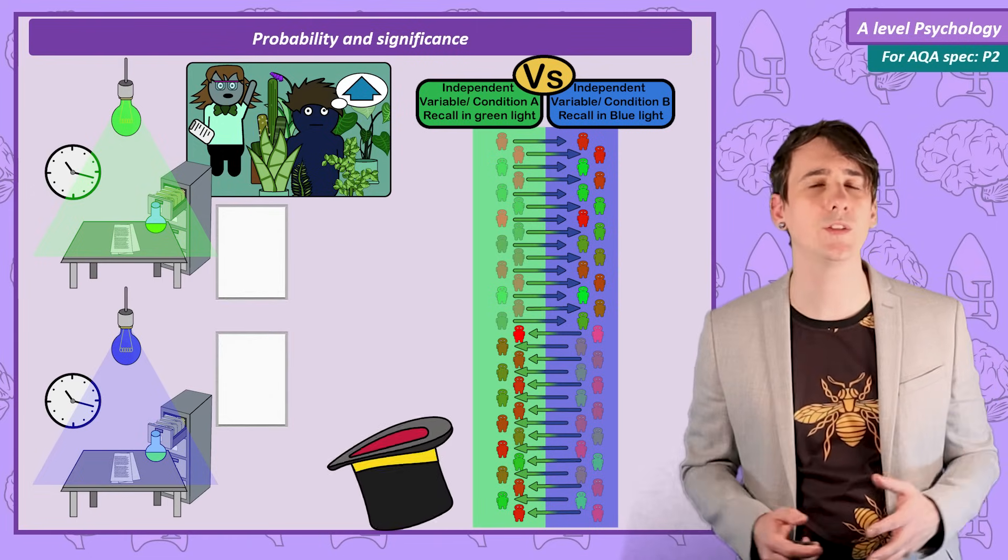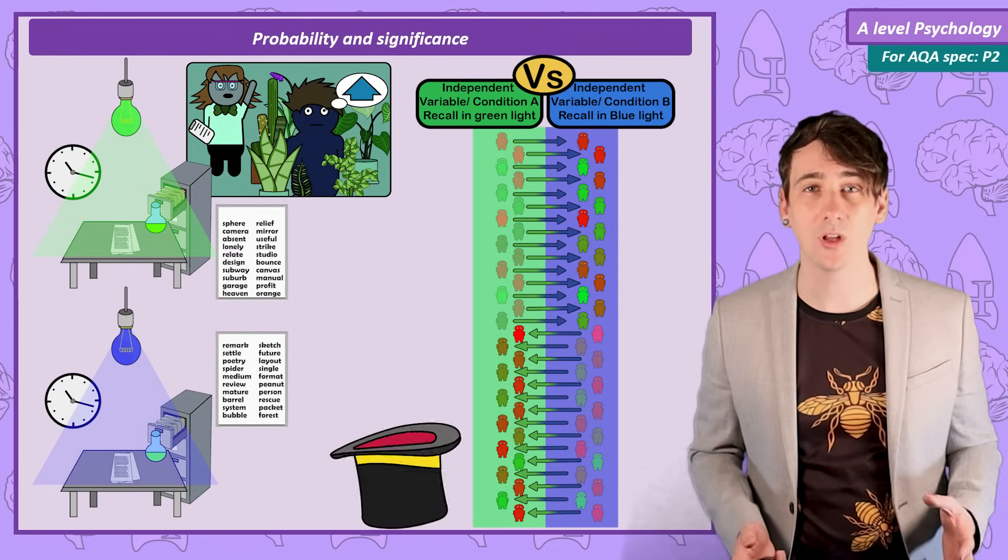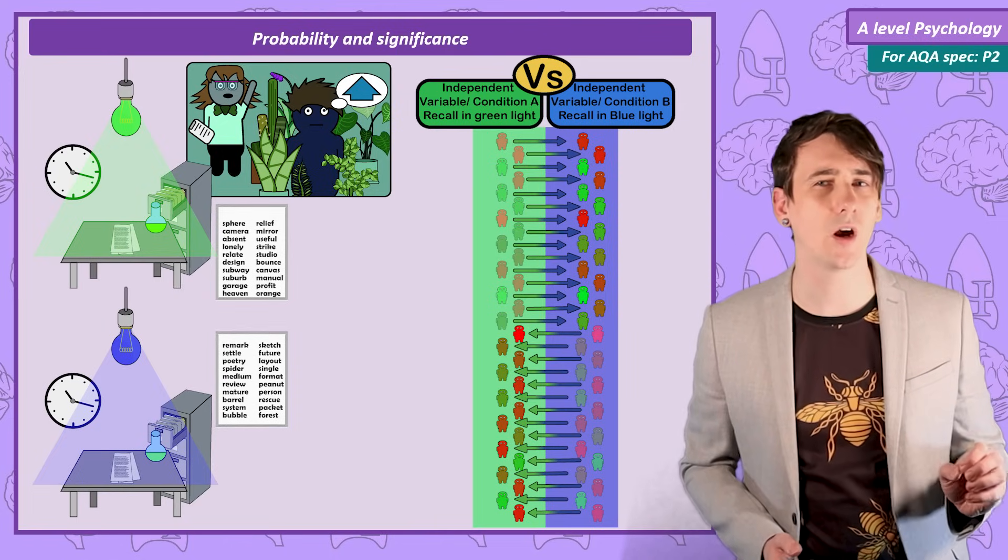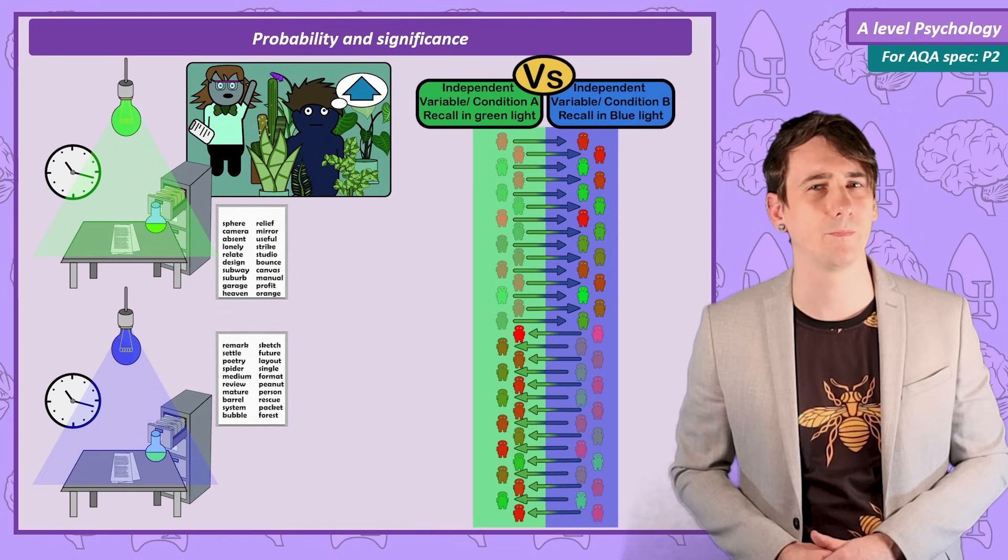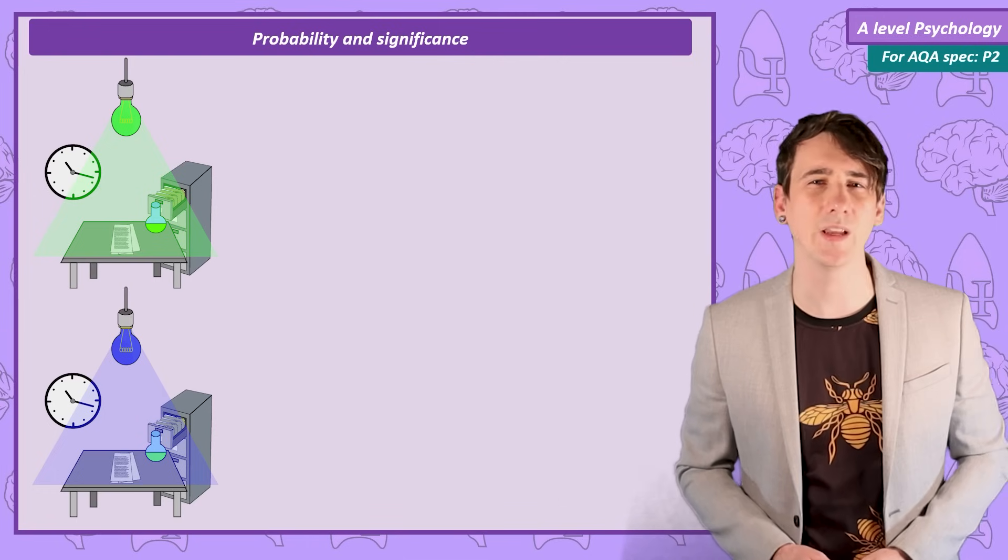I will also randomise the words used in each word list. I want to reduce the chance that all the easy to remember words are in just one of the word lists. I am set up, it is well controlled, let's get our data.